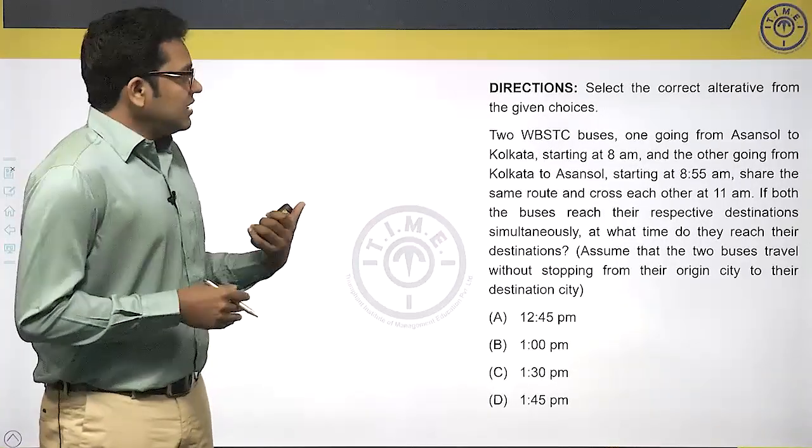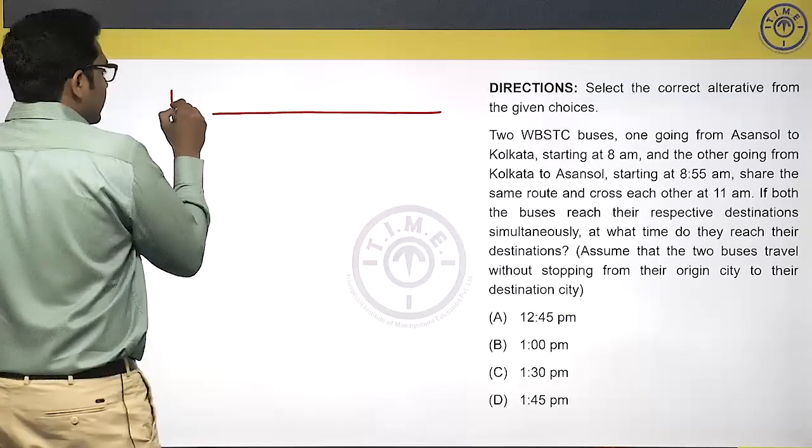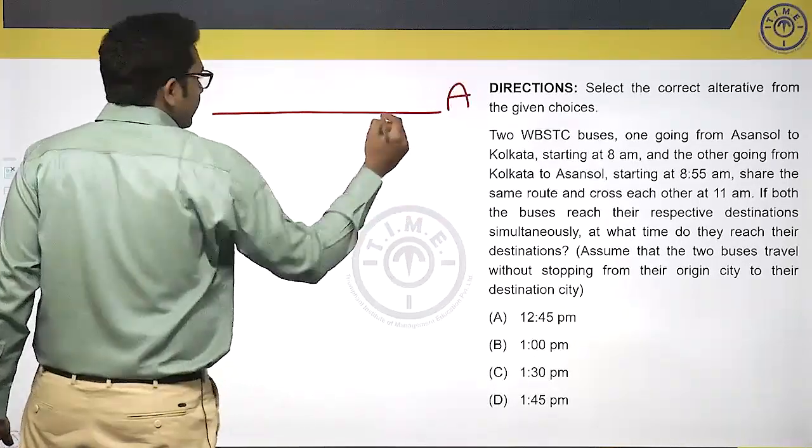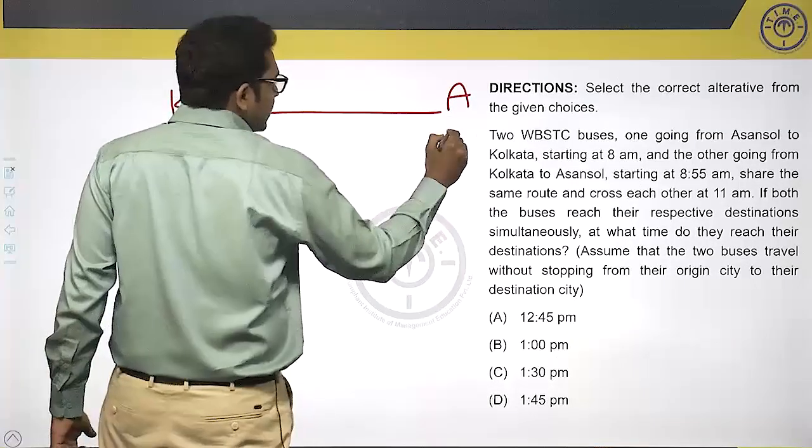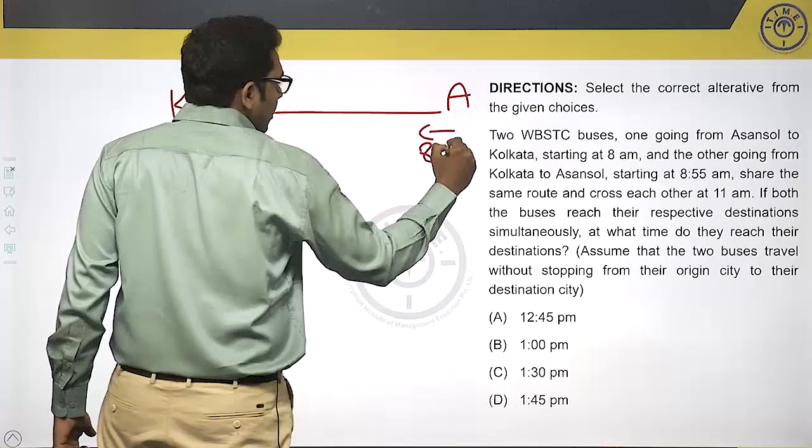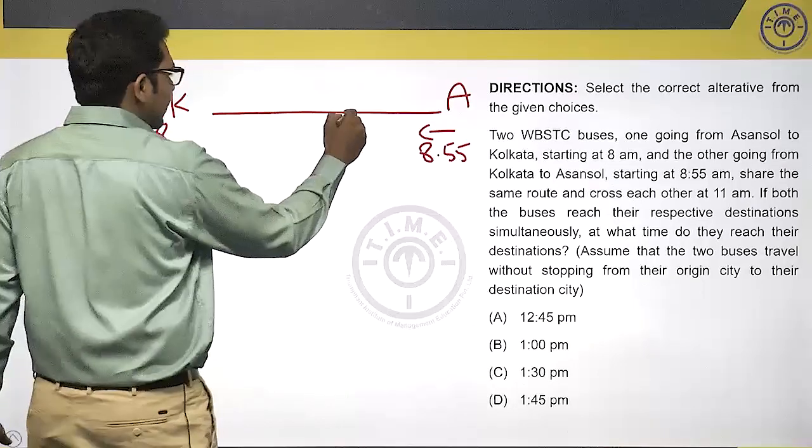Share the same route and cross each other at 11 AM. So, one bus goes from K to A, starts at 8 AM. The other starts from A to K at 8:55 AM. They cross each other at 11.